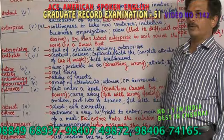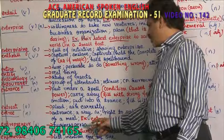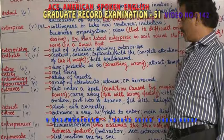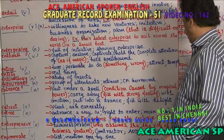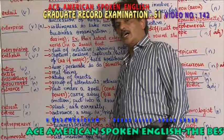Entrepreneur — he is the boss, he is the CEO, he is the managing director. Entrepreneur is the capitalist, a business person who assumes the risk of a business venture. He is taking the risk to do the business; he is a contractor. The adjective is entrepreneurial.